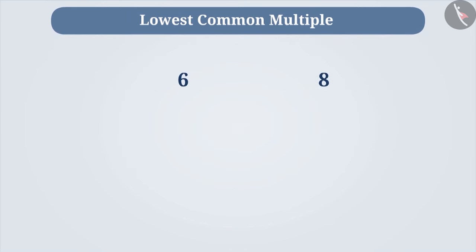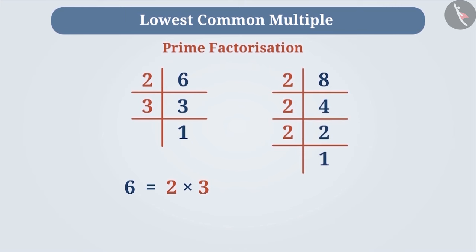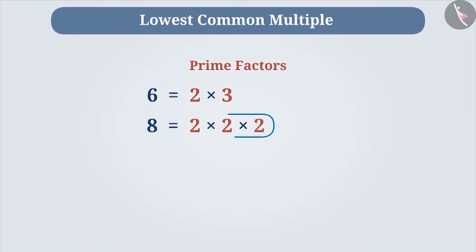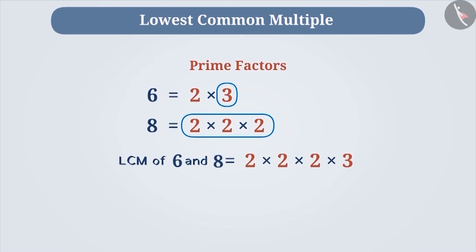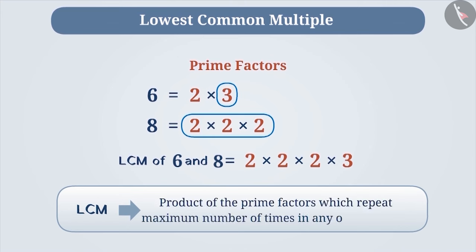Let's learn how to find the LCM of the given numbers. Let's find the LCM of 6 and 8. First, we perform the prime factorization of these two numbers. The prime factorization of 6 gives us 6 = 2 × 3. Similarly, for 8, we get the factors 2 × 2 × 2. The factor 2 is repeated three times and the factor 3 occurs only once. The LCM is found by taking the product of the prime factors occurring in maximum numbers. Therefore, the LCM of 6 and 8 is 2 × 2 × 2 × 3 = 24.